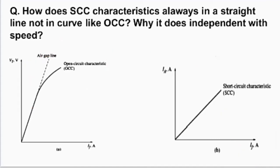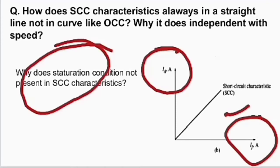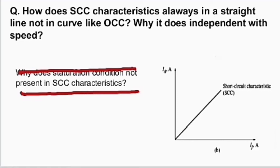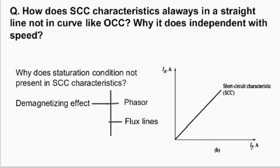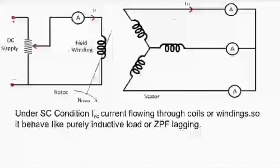Our main question is: why does the saturation condition not appear in SCC characteristics? The answer is very simple — it is due to the demagnetizing effect. We will explain the demagnetizing effect in two ways: first through a phasor diagram, and second through flux lines.